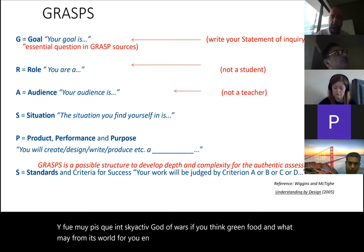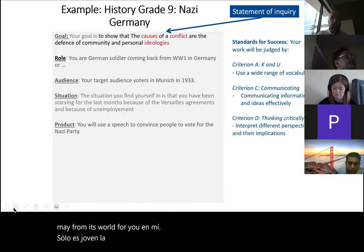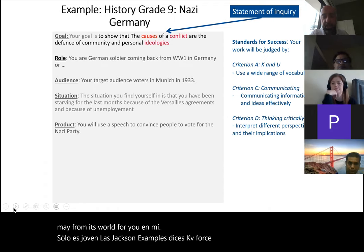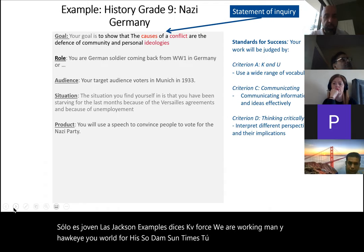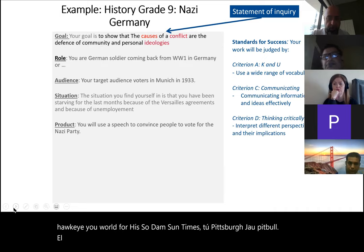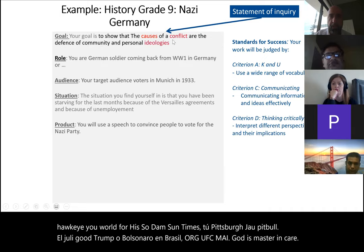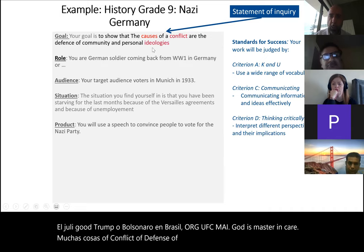Let me share examples. This is one I use with my Grade 9 MYP students working on Nazi Germany — the move to global war in Europe in the 1940s. I want them to understand how people could vote for someone like Hitler, and hopefully transfer that understanding to contemporary figures. My goal is my statement of inquiry: 'The causes of a conflict and the defense of community and personal ideologies.'